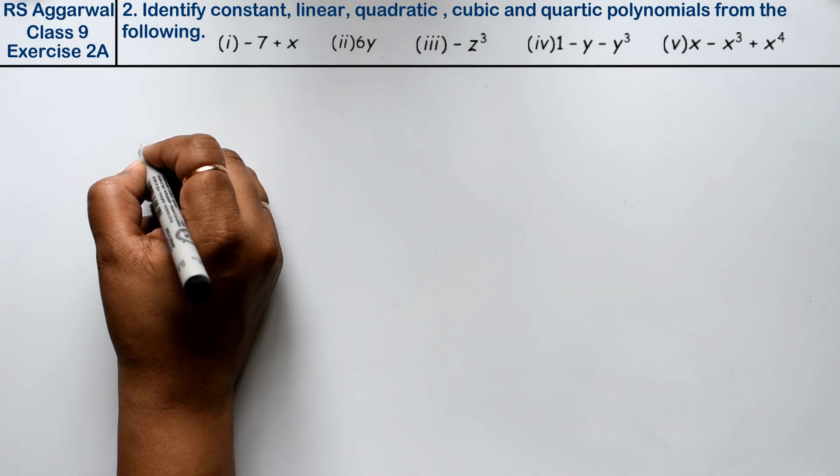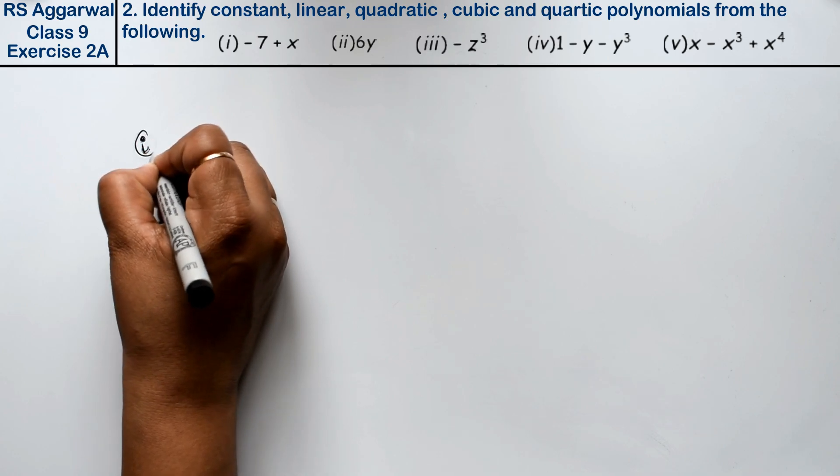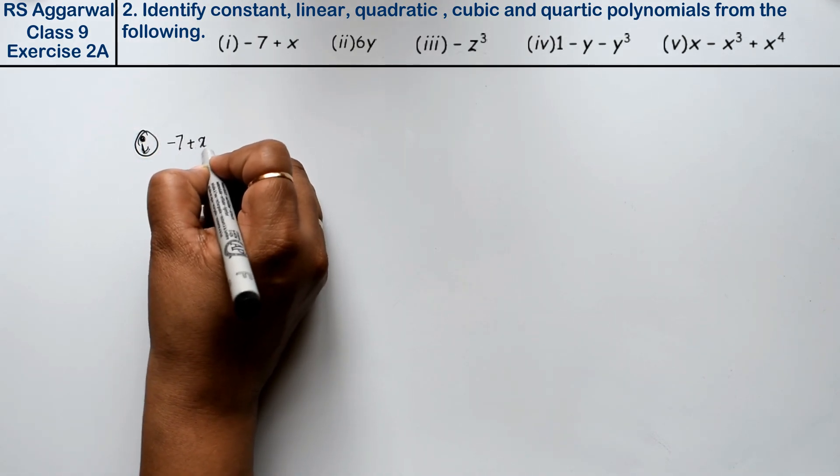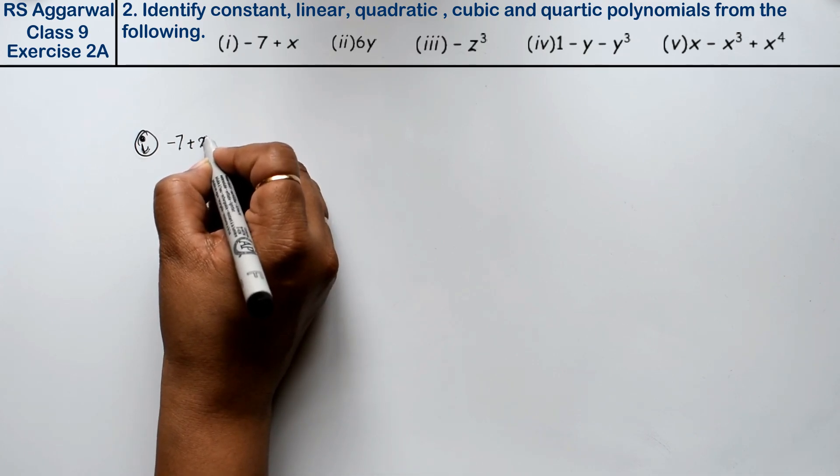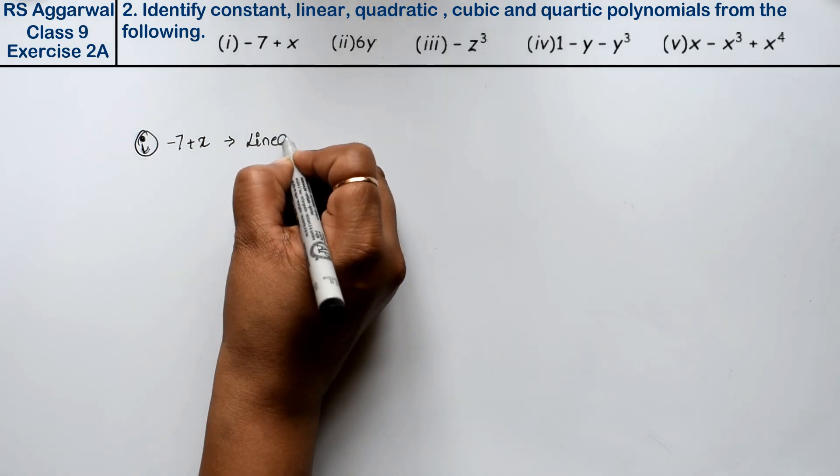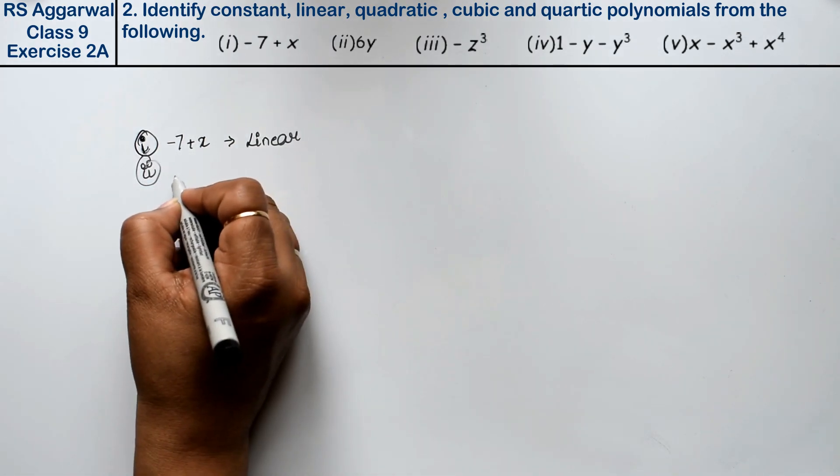First part is -7 + x. Friends, in this x has power 1, so that means it's a linear polynomial, right? Friends, let's do the second part. Second part is 6y. In this y has power 1, that means it's also a linear polynomial.